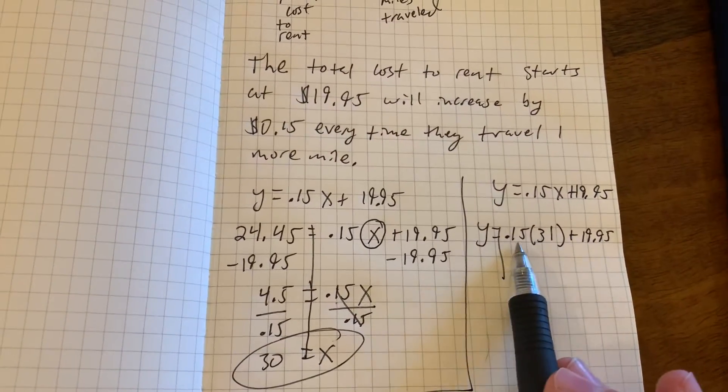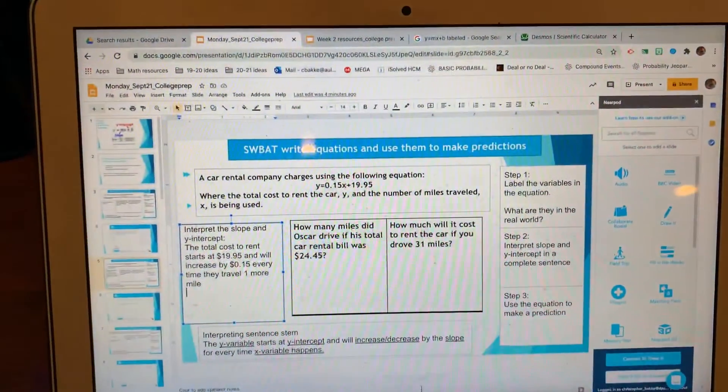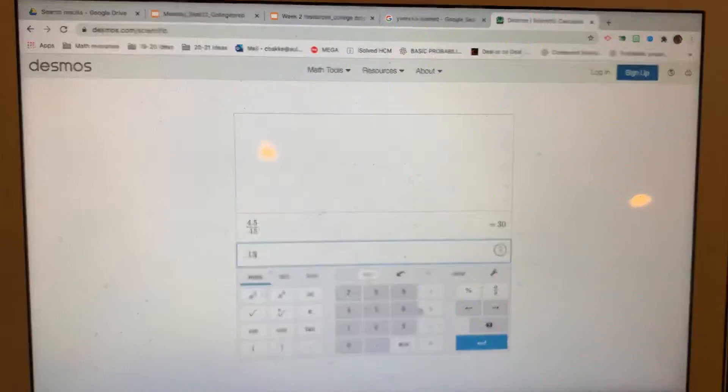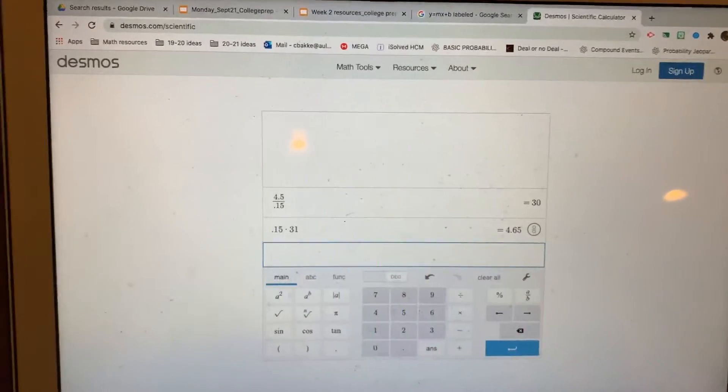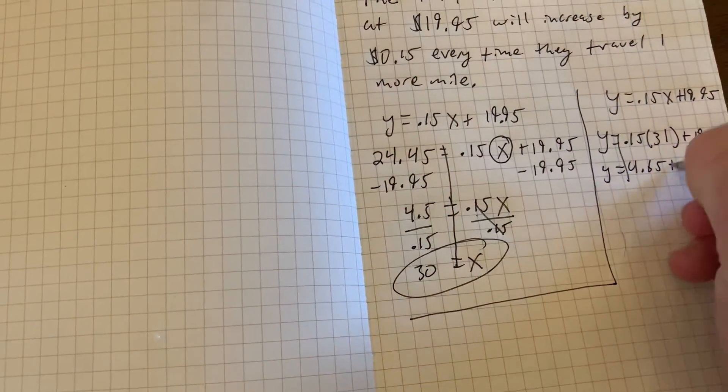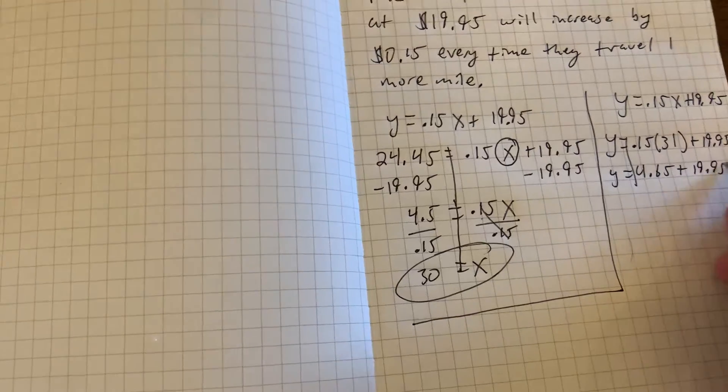So I'm going to go do the 0.15 times 31. 0.15 times 31. I'm going to hit Enter. And that gets the 4.65.